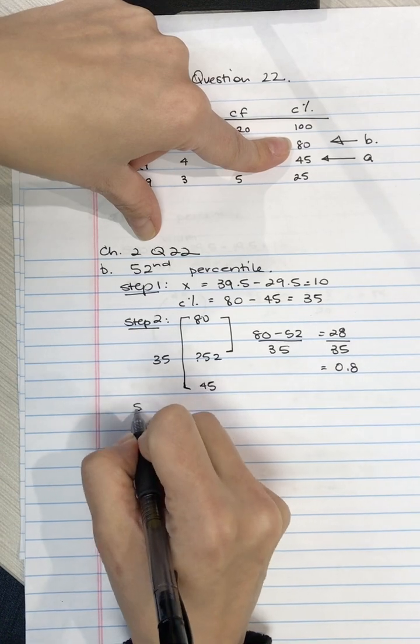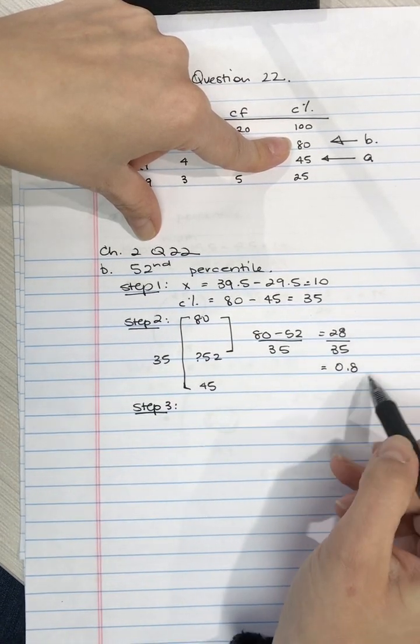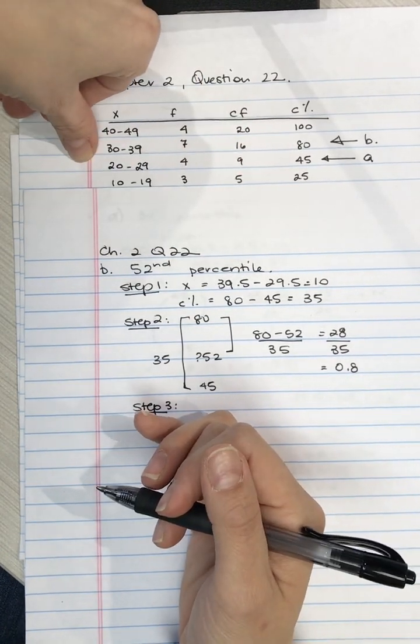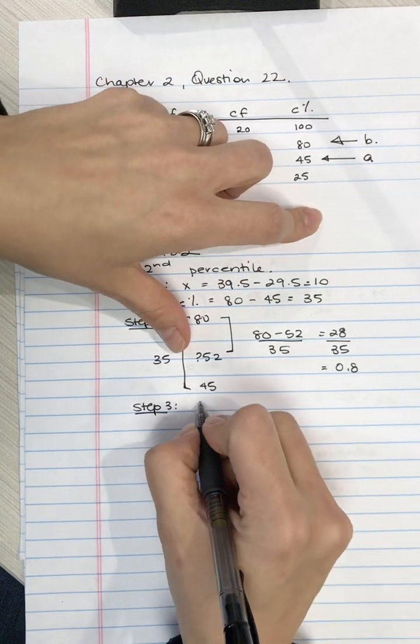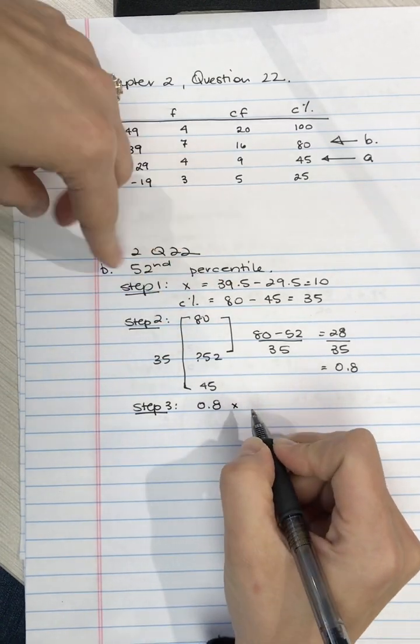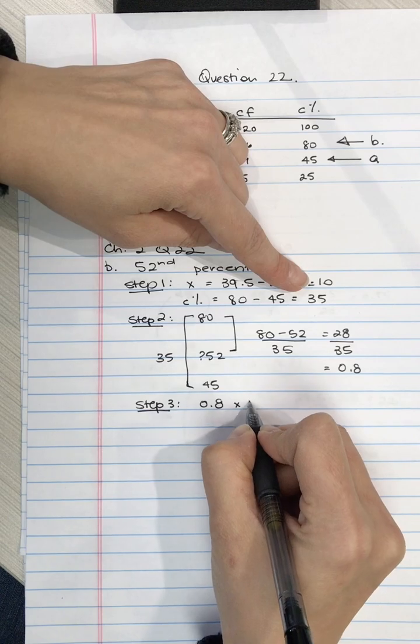So we get 28 divided by 35, which is equal to 0.8. Step 3, we want to find what is 0.8 of 10 on this, the interval on the X column. So we're going to take 0.8, which is what we got in Step 2, multiply it by the width on X, which is what we got in Step 1.